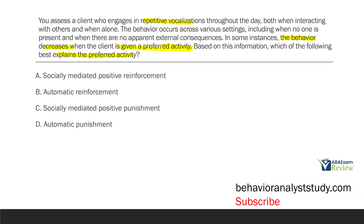If a preferred activity is given following the behavior and the behavior decreases, that makes the preferred activity a punisher. Option A, socially mediated positive reinforcement — not reinforcement, we're looking at punishment. Option B, automatic reinforcement — again, not reinforcement. Option C, socially mediated positive punishment: it is socially mediated because somebody else is providing the consequence, positive because it's being added, and it is a punishment. Option D, automatic punishment — since it's socially mediated, it can't be automatic as well. Our answer is C, socially mediated positive punishment.